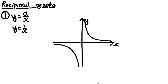To explain why it looks like this, substitute some values: when x is a small decimal, when x is about 1, and when x is large such as x = 10. You'll see why the graph takes this shape.